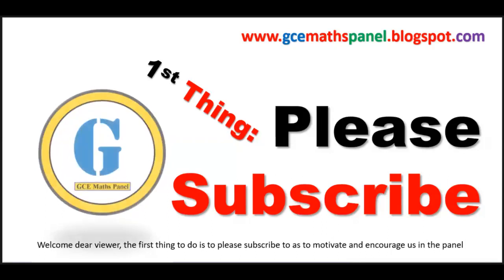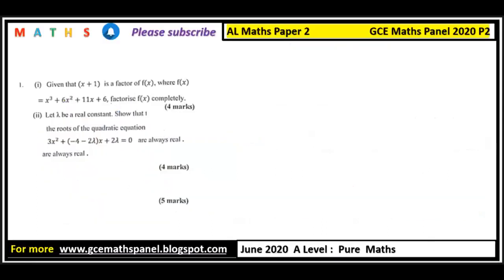Let's begin with this first question of June 2020. Given that x plus one is a factor of f(x), where f(x) equals x³ + 6x² + 11x + 6, factorize f(x) completely. We have been told that x plus one is a factor, so we can use long division to get the other two factors.